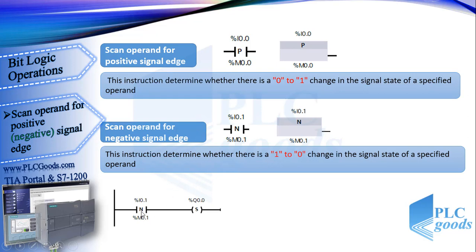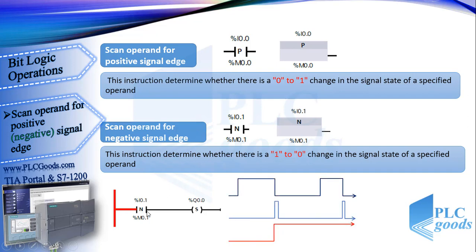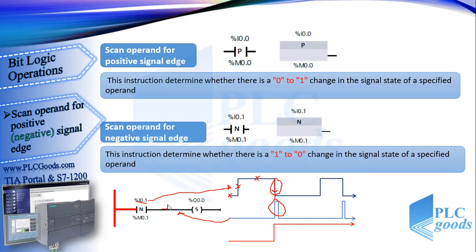This instruction is sensitive to 1 to 0 changing at the I 0.1 address. When the value of this address is 0, changes to 1, or stays at 1, the output of this instruction is 0. But when its state changes from 1 to 0, this instruction generates a pulse at its output, which makes set Q 0.0 turn to 1, and then returns to 0.